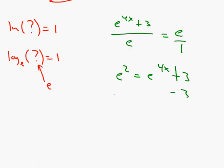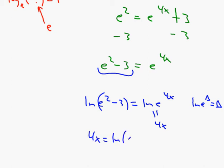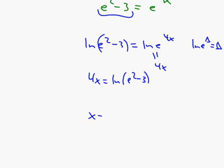Note that 3 is not part of the exponent — just be careful there. Now it's a normal equation: subtract 3 from both sides to get e squared minus 3 equals e to the 4x. The left side is just a number, so take the ln of both sides: ln of (e squared minus 3) equals ln of e to the 4x, which simplifies to 4x. So x equals ln of (e squared minus 3) over 4.